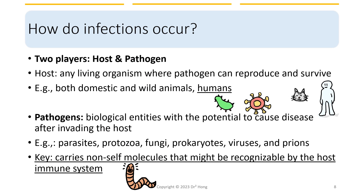When we talk about immunity, it's all about defending against infections. So how do infections occur? We are talking about two players: the host and the pathogen. Hosts can be any living organisms where pathogens can produce and survive — for example, domestic animals, wild animals, and humans. Since this is a human immunology course, we will focus on humans as our host. In terms of pathogens, they are biological entities with potential to cause diseases after invading the host. These include parasites, protozoa, fungi, prokaryotes such as bacteria, viruses, and prions.